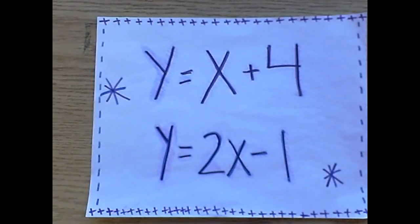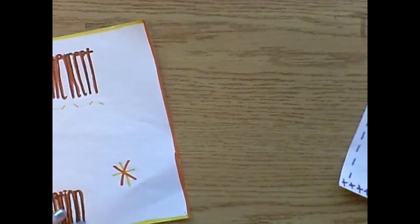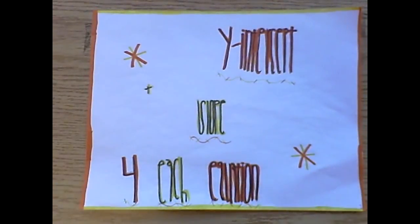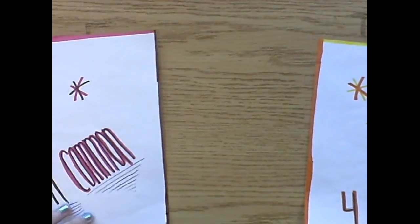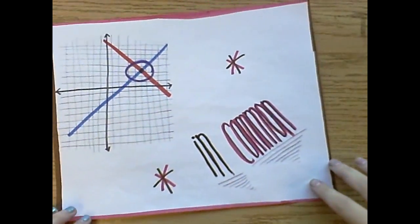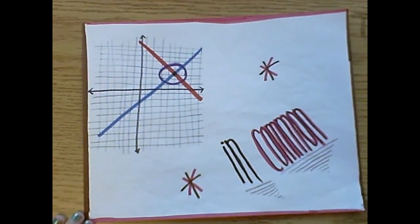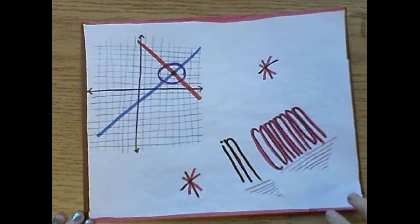Y equals X plus 4, Y equals 2X minus 1. A different Y-intercept and slope for each equation. See where the two lines cross and what's in common.